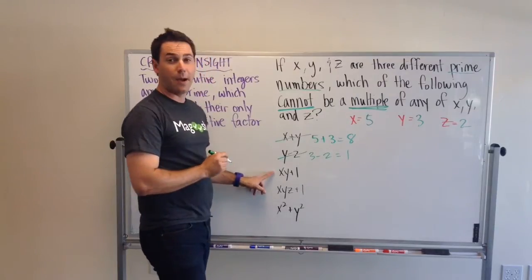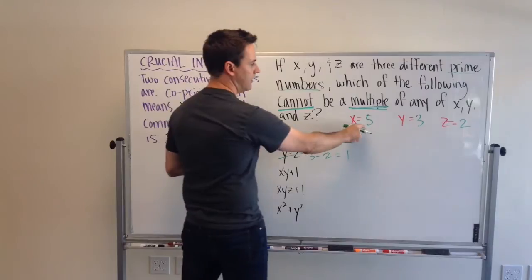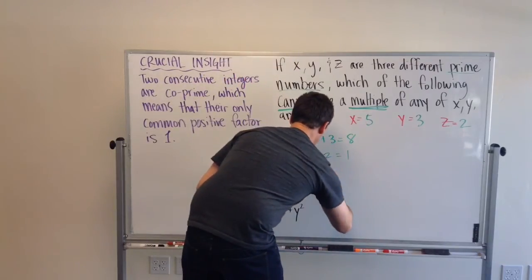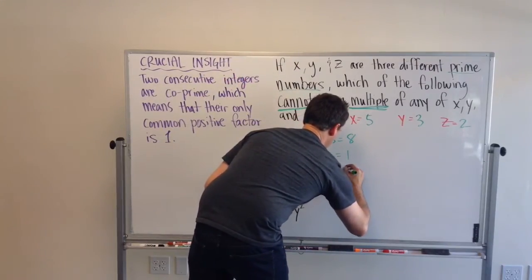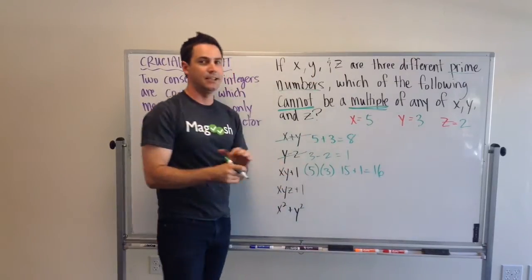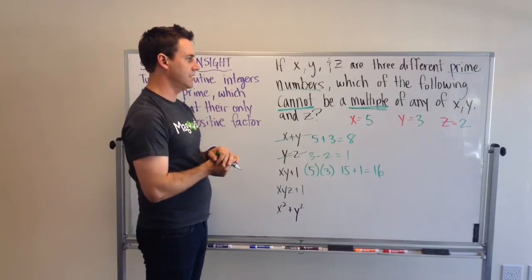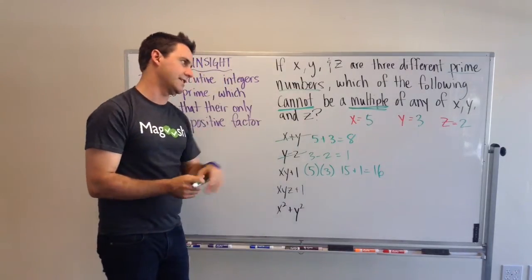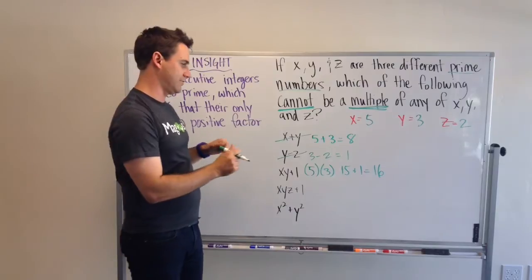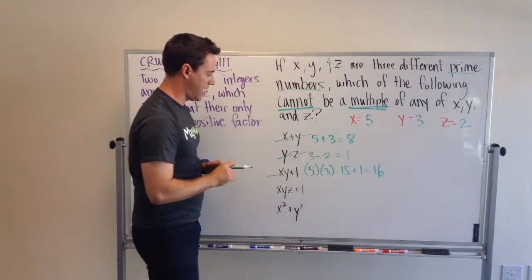x, y, plus 1. So, x times y, plus 1. So, 5 times 3. It's 15 plus 1 equals 16. Is 16 a multiple of one of these numbers? Or, excuse me, is one of these numbers a multiple of 16? I've been saying this wrong. Yes, it's 2. So, we can eliminate x, y, plus 1.